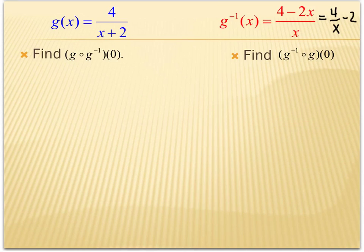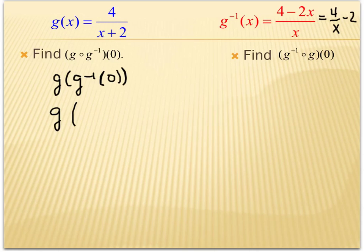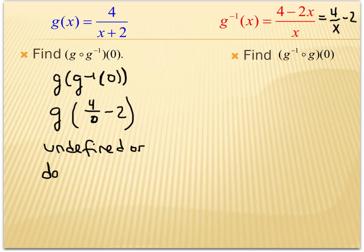Now we're going to compose g with its inverse and plug in the value 0. We can write this as g of g-inverse of 0. We'll evaluate by first plugging 0 into the inverse function. Hopefully you can see this causes an issue — I'm not allowed to have 0 in the denominator. So this is undefined, or does not exist. The reason is that 0 does not belong in the domain of the inverse function, and therefore 0 will not belong in the domain of the composition.